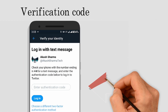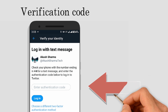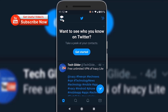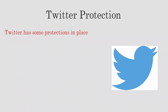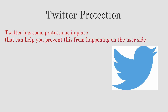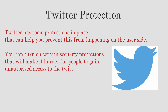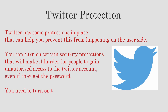This will make your Twitter account a little bit more secure. Also watch out for the permissions a third-party app asks on Twitter. Several Twitter accounts have been hacked in the past few years. Twitter has some protections in place that can help you prevent this from happening on the user side. You can turn on certain security protections that will make it harder for people to gain unauthorized access to the Twitter account.